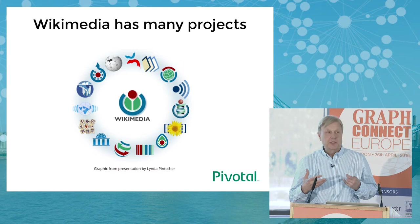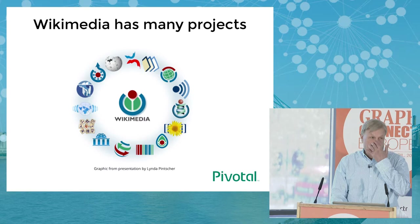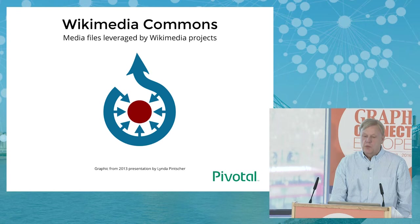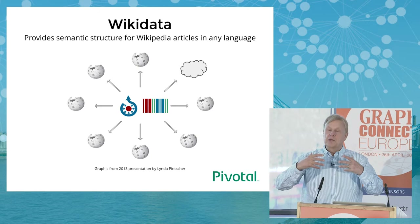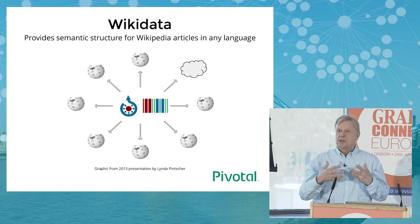Wikidata is a sister project to Wikipedia. Wikimedia, the umbrella organization, has many projects — most famous is Wikipedia, then Wikipedia Commons for media assets, and Wikidata, which has all the structural information. It's what graph geeks really get excited about, because all the Wikimedia articles are related to each other through some 2,000-odd relationships, all accessible behind an API.